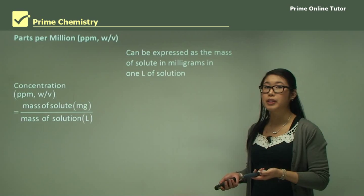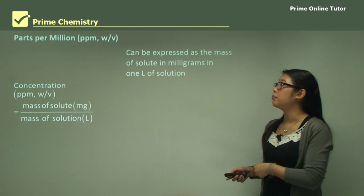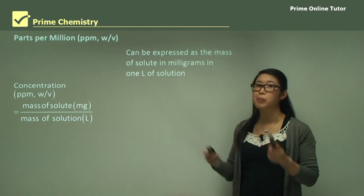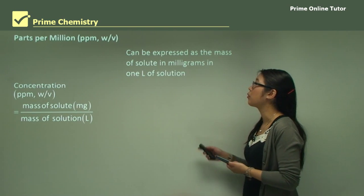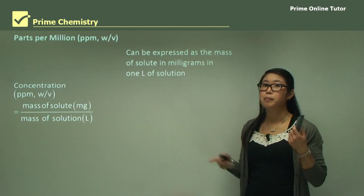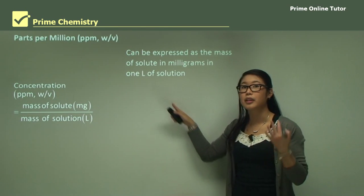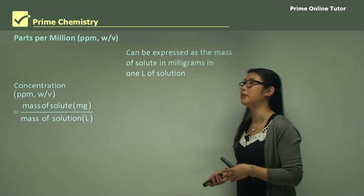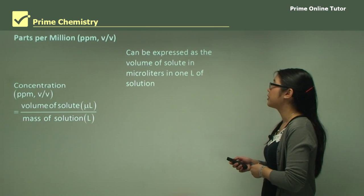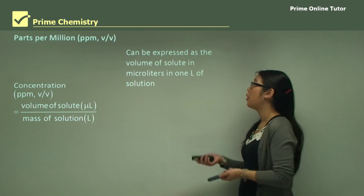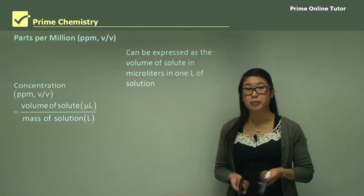Parts per million can also be expressed as weight-to-volume: the mass of solute in milligrams per one litre of solution. Since one mil of water equals one gram of water, one milligram per kilogram equals one milligram per litre. It can also be done volume-to-volume, expressed as the volume of solute in microlitres per litre of solution, where microlitres are equivalent to the milligrams we discussed.